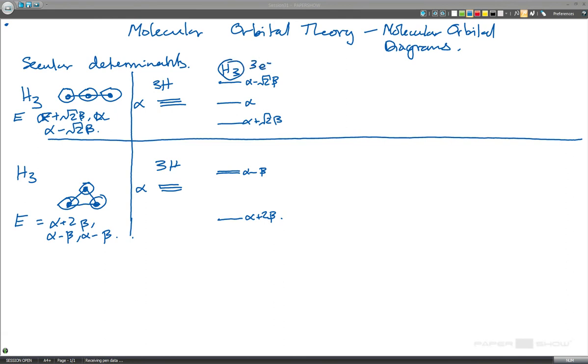We have alpha minus root 2 beta, alpha and alpha plus root 2 beta. And here we have alpha minus beta. So we actually have two levels there, and we also have alpha plus 2 beta. Now, if this is H3 neutral, it has three electrons. So we can put them in 1, 2, 3 here, or 1, 2, 3 in the triangle form there.